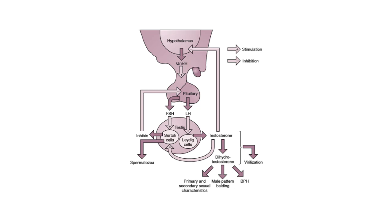Now let us summarize what we have learned with the help of this diagram. The hypothalamus secretes GnRH, which stimulates the anterior pituitary to secrete FSH and LH. FSH stimulates the Sertoli cells of the testis to secrete inhibin and spermatozoa, with inhibin involved in negative feedback. LH stimulates the Leydig cells to secrete testosterone, which is also involved in negative feedback and stimulates Sertoli cells. Testosterone is converted to dihydrotestosterone; both are involved in virilization. Dihydrotestosterone is involved in the development of primary and secondary sexual characteristics, male pattern balding, and the pathogenesis of benign prostatic hyperplasia.